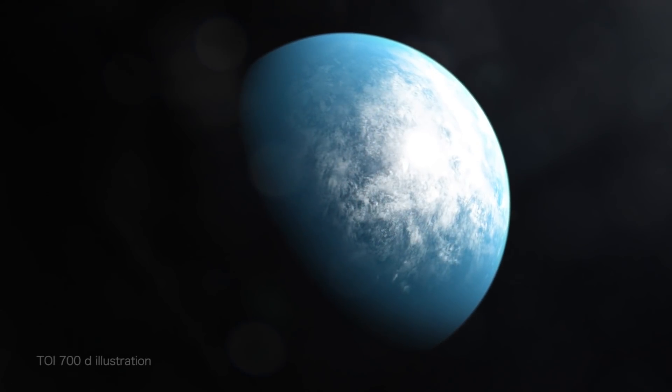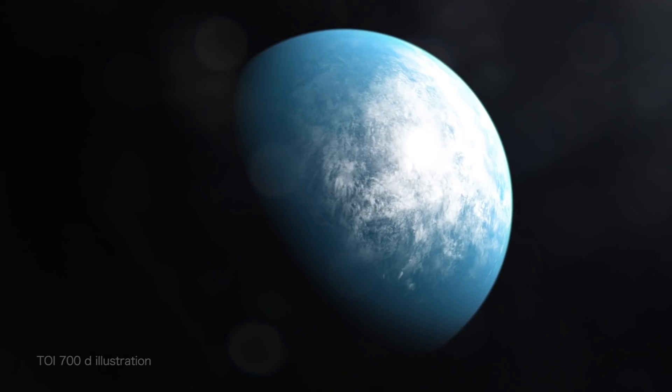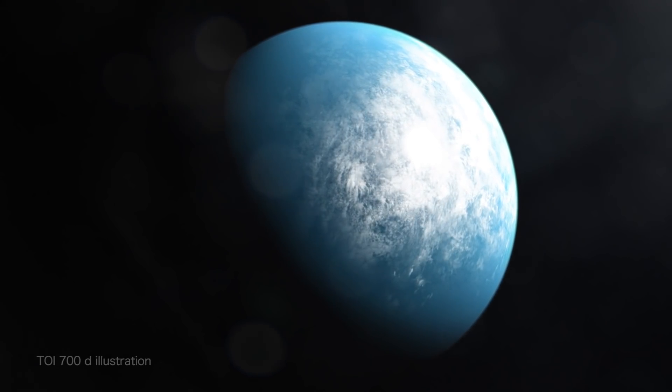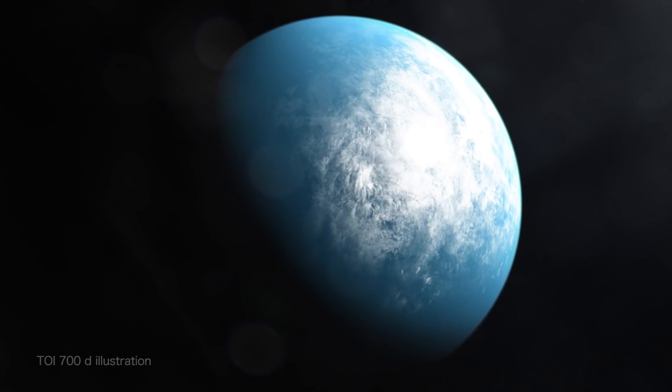NASA's TESS mission has found its first Earth-sized world in its star's habitable zone. This means the planet, called TOI 700D, has the potential for liquid water on its surface.